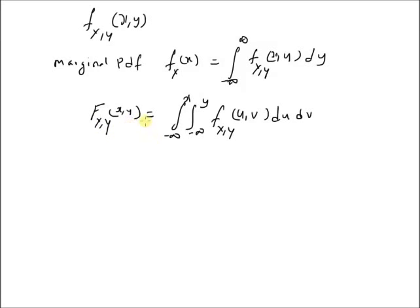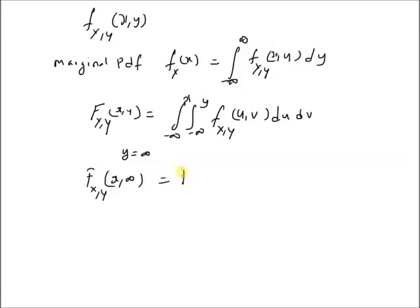By putting a value of y equal to infinity in the CDF, that is F_{x,y}(x, ∞), the value of the random variable y can be anything between minus infinity and plus infinity. So this basically by definition means that this is equal to the marginal CDF F_x(x).